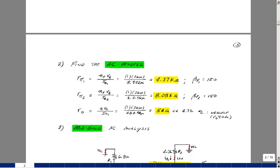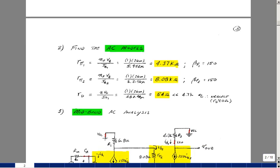So we can use the DC information to calculate our AC models. Let's assume that alpha F is equal to 1, and we're operating at about room temperature, so V sub T is around 26 millivolts. With the two values of base current we have, we've got for rpi 1, 4.37K, and for rpi 2, 8.08K. And our AC beta is the same as our DC beta, the same as beta F, about 150.